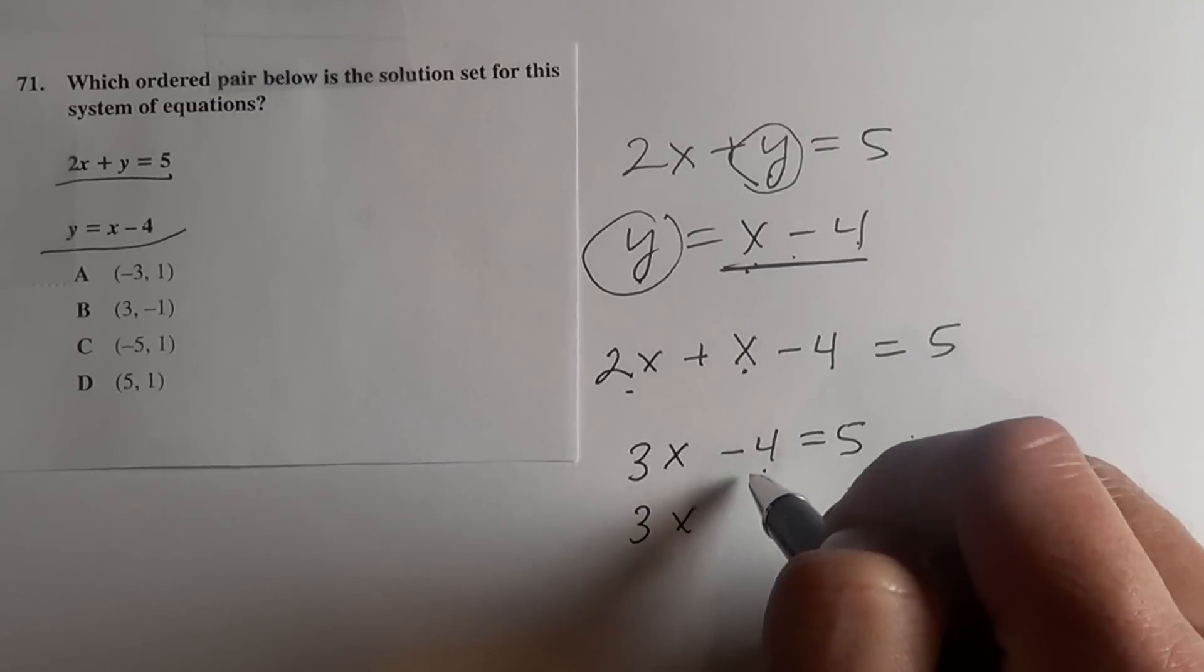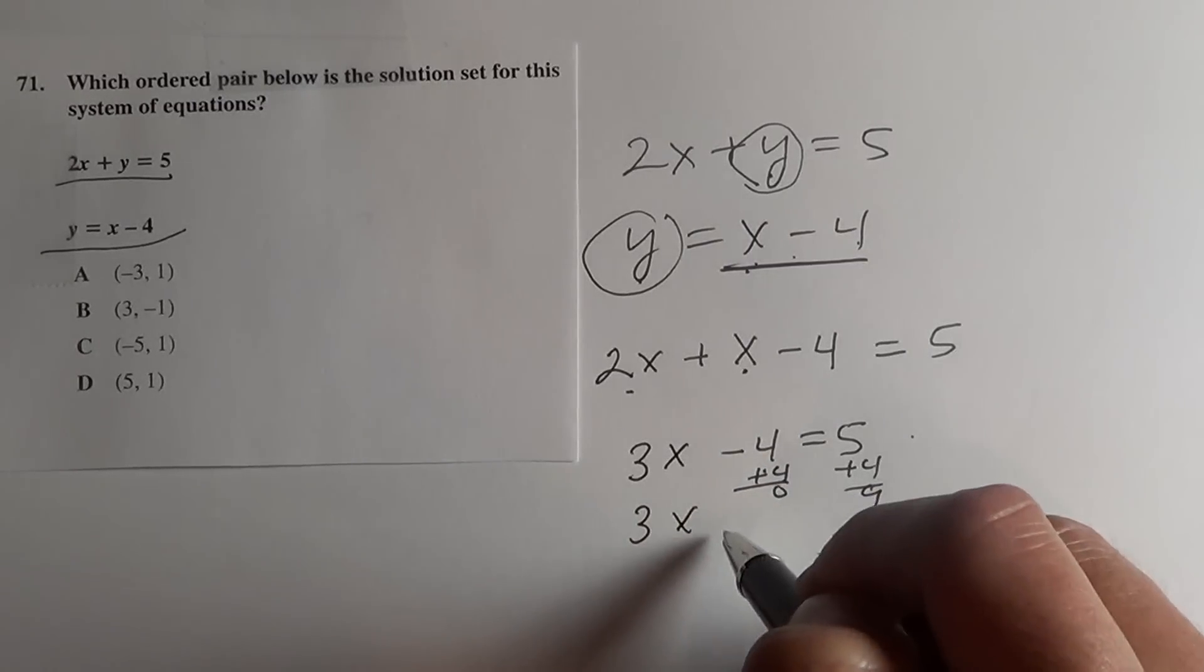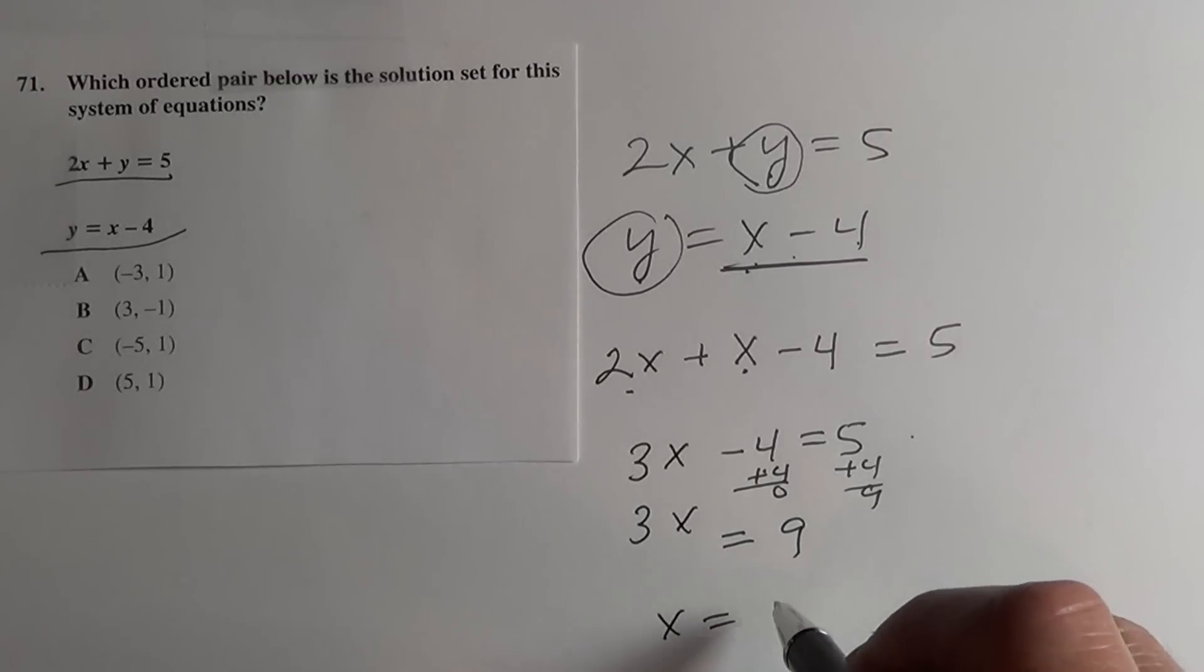Let's put this on the other side. So plus 4 is 0, plus 4 is 9, so 3x equals 9, x equals 3.